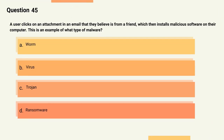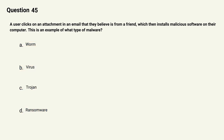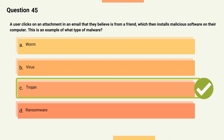Question 45: A user clicks on an attachment in an email they believe is from a friend, which then installs malicious software on their computer. This is an example of what type of malware? Options: A) Worm, B) Virus, C) Trojan, D) Ransomware. The correct answer is Option C, Trojan. Explanation: A Trojan is a type of malware that disguises itself as a legitimate program in order to trick the user into downloading and installing it.